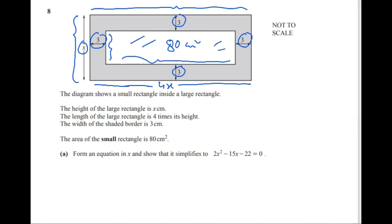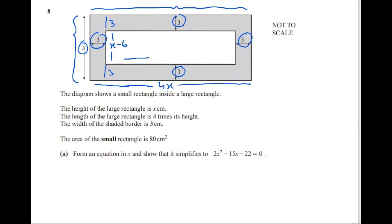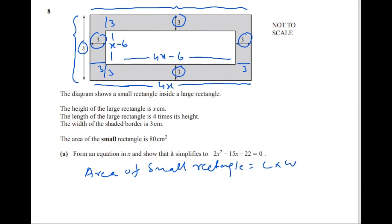So first we must find the length and width of the small rectangle. The shaded border is 3 on each side, so the height of the small rectangle is x minus 6. And the width will be 4x minus 6, because we subtract 3 and 3 from 4x.